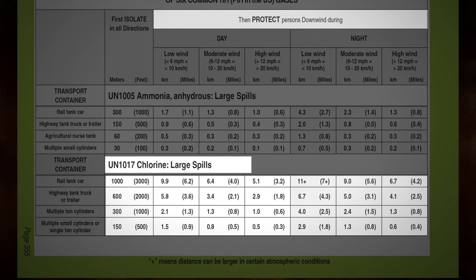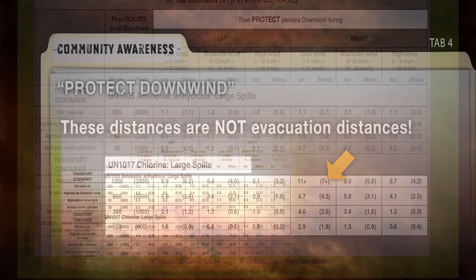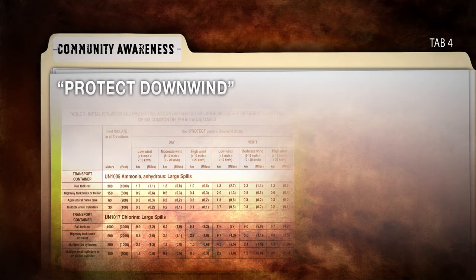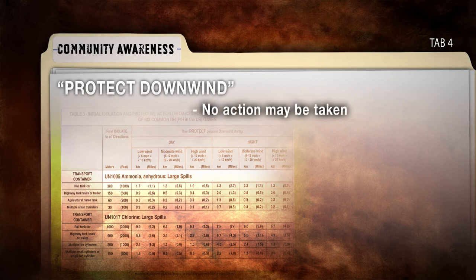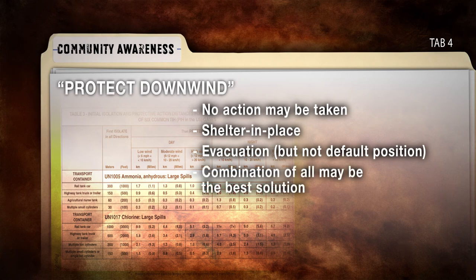The concern is that the Protect Downwind Distances will be mistakenly considered evacuation distances. This could not be further from the truth. Under certain listed conditions, these Protect Downwind Distances are as much as seven miles. These distances are not evacuation distances. Protect Downwind can be achieved in several different ways. According to the extent of the release, no action may need to be taken. Having residents shelter in place is another option. Evacuation can also be considered but should not be the default position. A combination of all of these options may be the best solution.